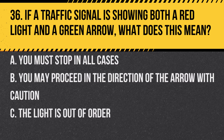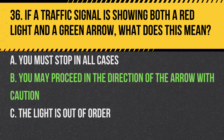Question 36. If a traffic signal is showing both a red light and a green arrow, what does this mean? a. You must stop in all cases. b. You may proceed in the direction of the arrow with caution. c. The green arrow allows movement in its direction while the red light controls the other lanes.